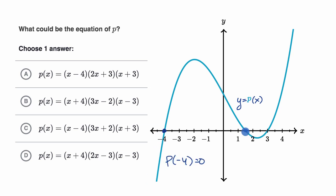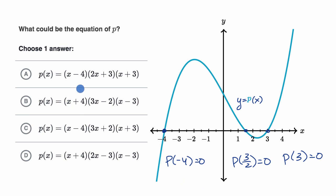We also know that p of — it looks like one and a half, or I could say three halves — p of three halves is equal to zero. And we also know that p of three is equal to zero. So let's look for an expression where that is true. Because it's in factored form, each of the parts of the product will probably make our polynomial zero for one of these zeros.